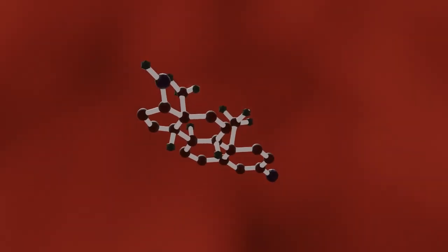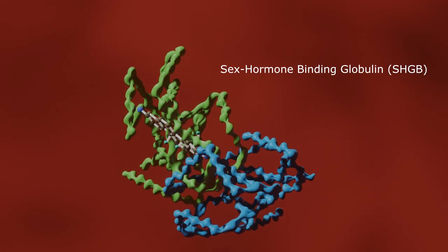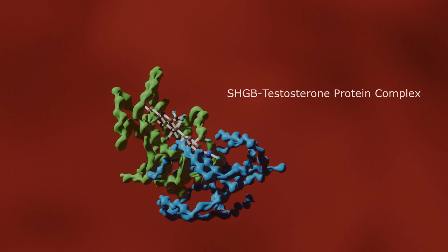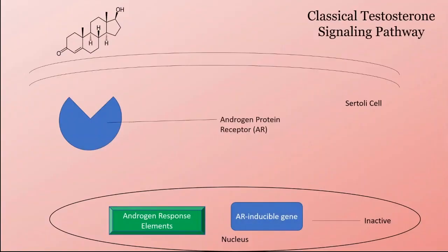In addition to the ABP, testosterone will bind to the sex hormone-binding globulin, which will allow testosterone to travel through the bloodstream and reach its target cells, known as the Sertoli cells. Testosterone has two pathways that increase gene expression in the Sertoli cell nucleus, which promotes spermatogenesis.